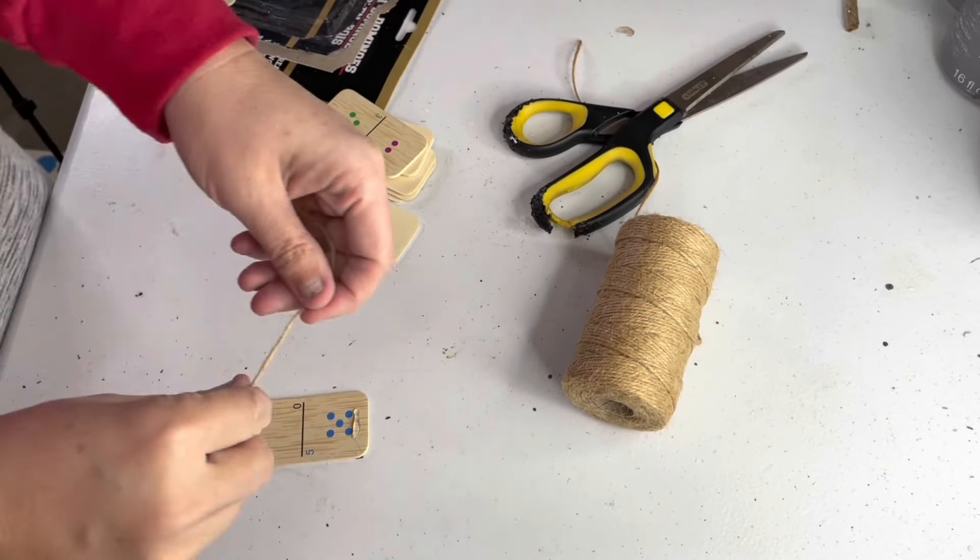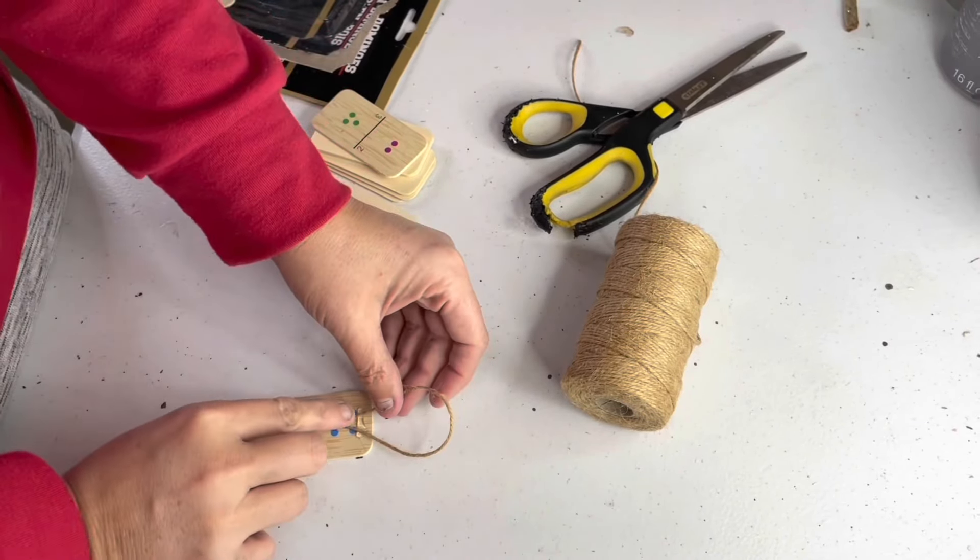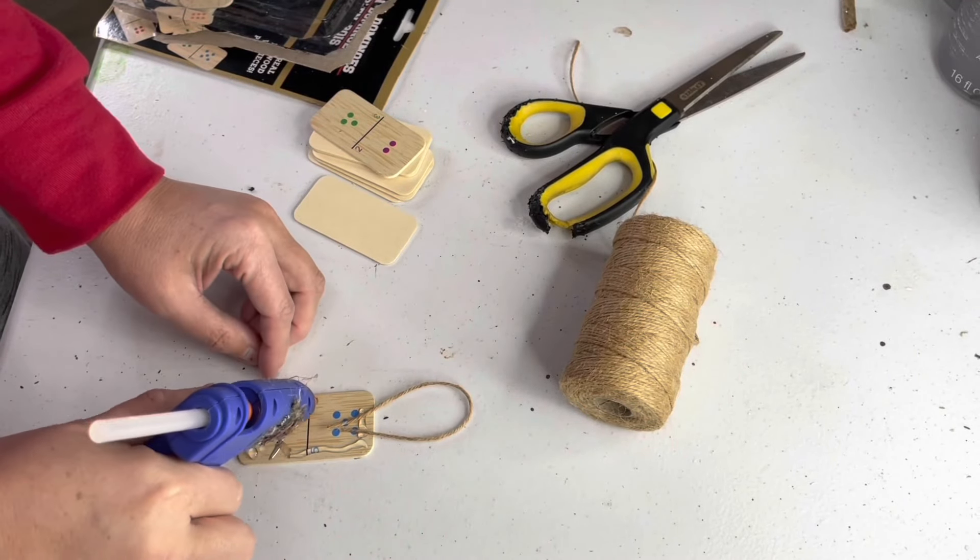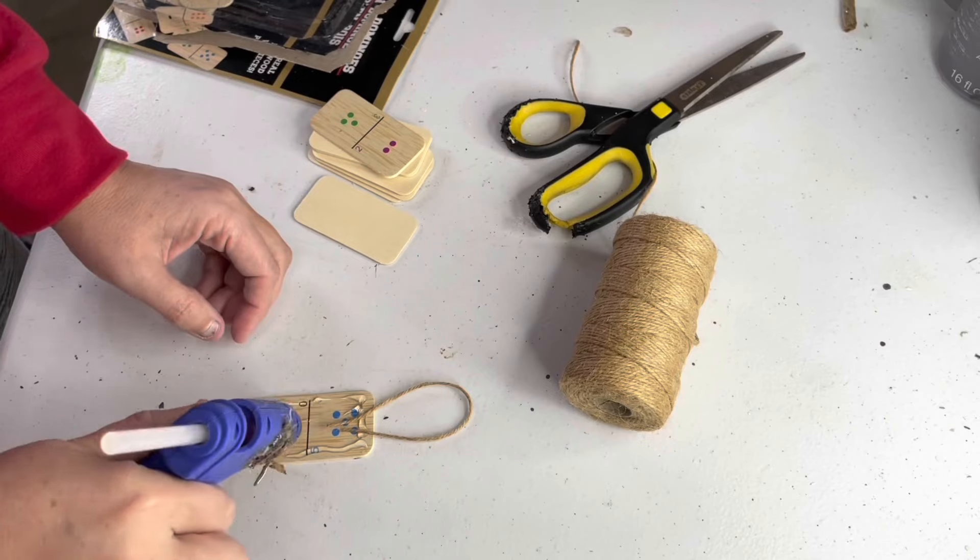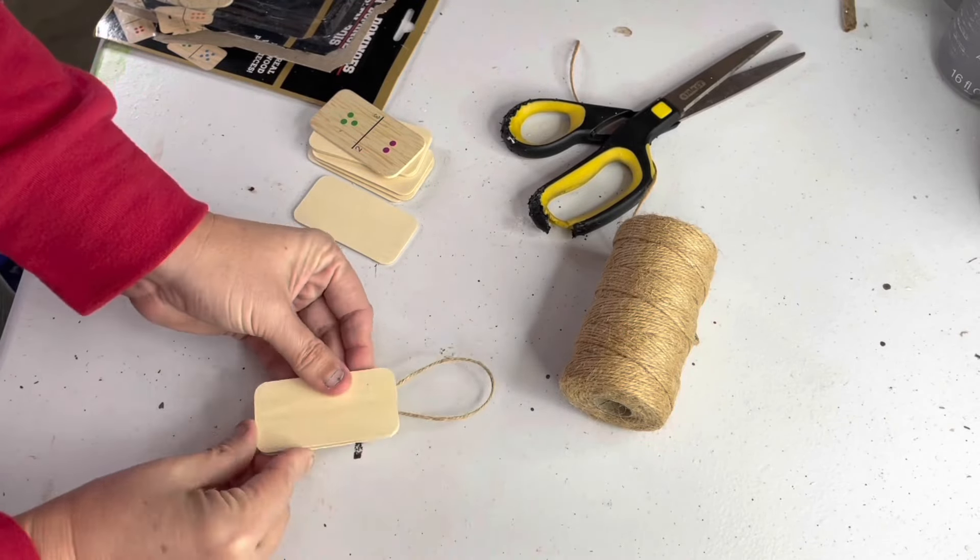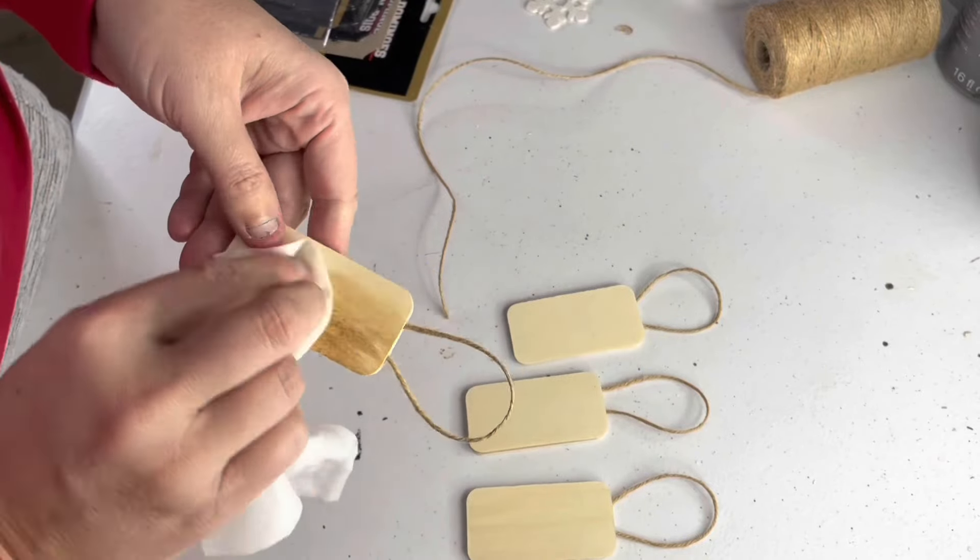I cut lengths of twine that were about six inches long for the hangers and glued those to the top of the printed side of each domino. Then I applied more glue to the piece and added a second domino face down. This is so that we now have a front and back of just the bare wood.